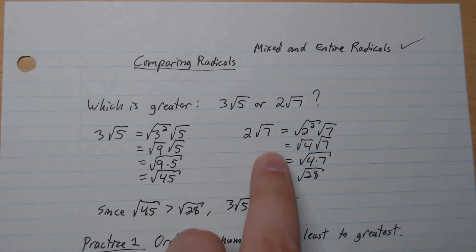Here we have 2 root 7, so square root here, so we're going to go 2 squared square root as such. Root 4 root 7, root 4 times 7 gives root 28.